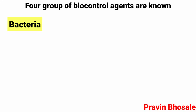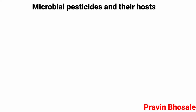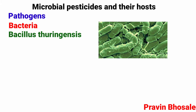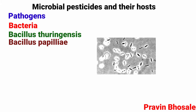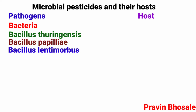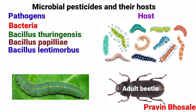Four groups of biocontrol agents are known: bacteria, fungi, viruses, and protozoans. For microbial pesticides and their hosts — bacterial pathogens include Bacillus thuringiensis, Bacillus papilliae, and Bacillus lentimorbus. Their hosts are caterpillars, cabbage worm, and adult beetles.